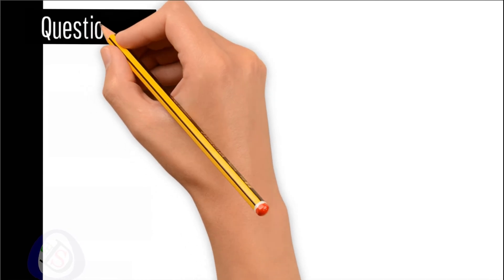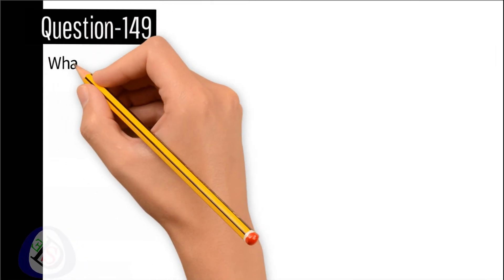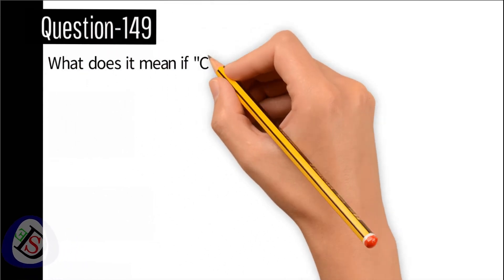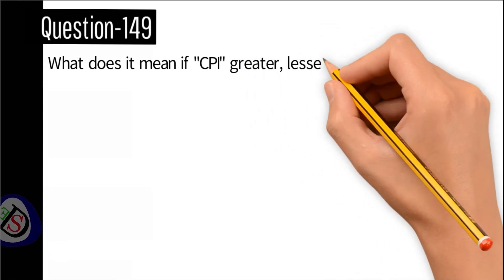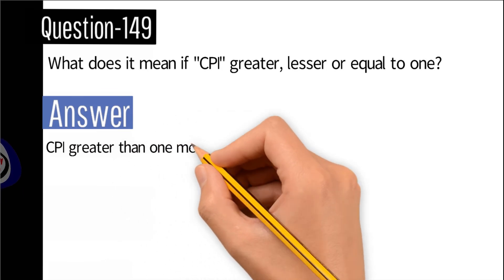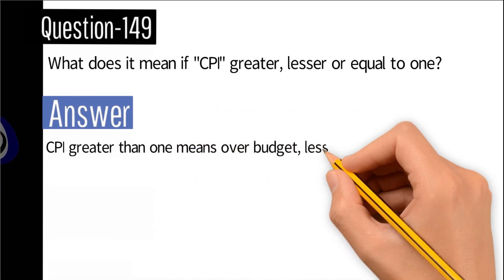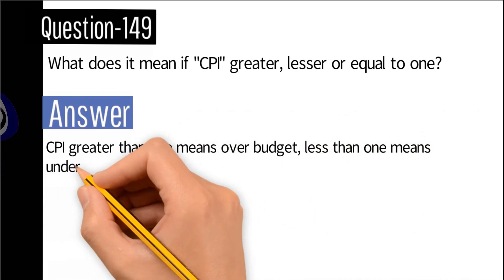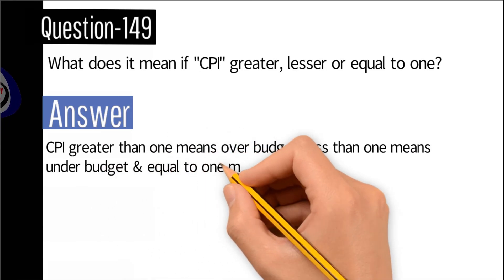Question number 149: What does it mean if CPI is greater, lesser, or equal to 1? Answer: CPI greater than 1 means over budget, less than 1 means under budget, and equal to 1 means same as per budget.